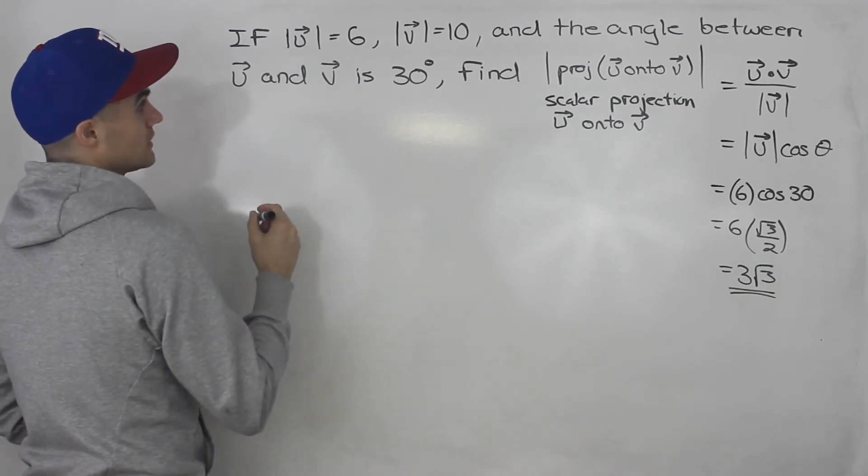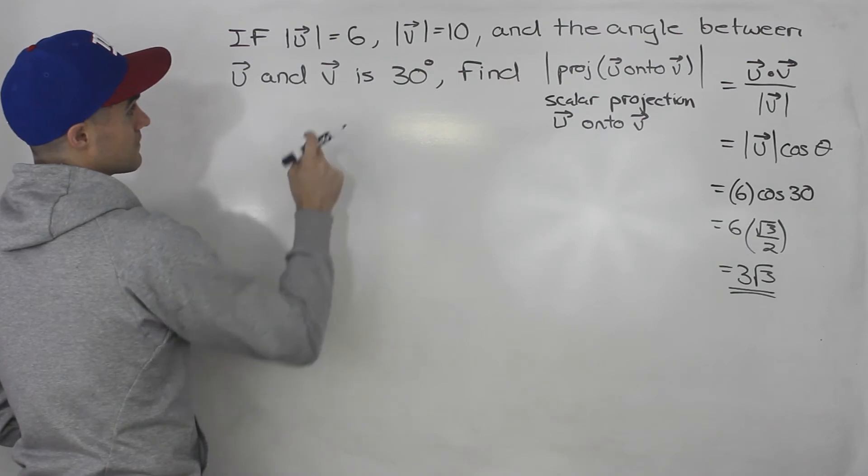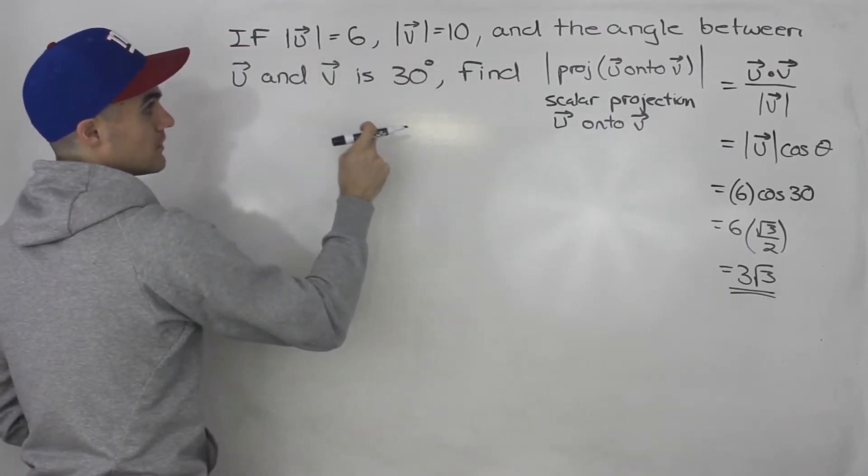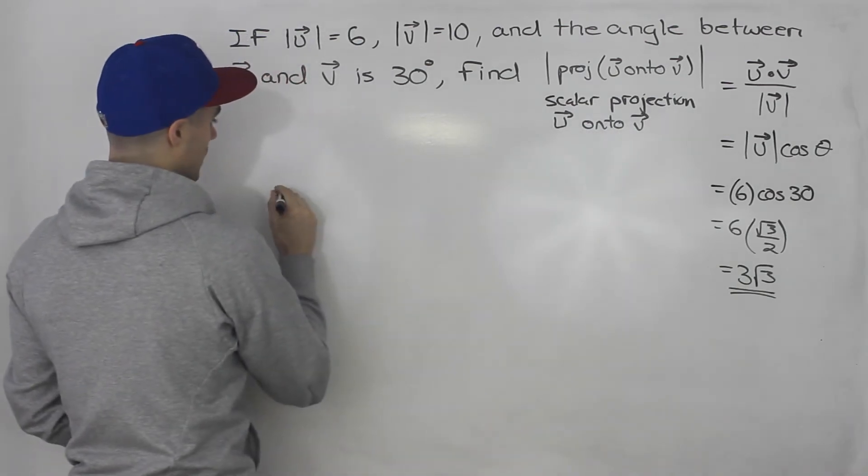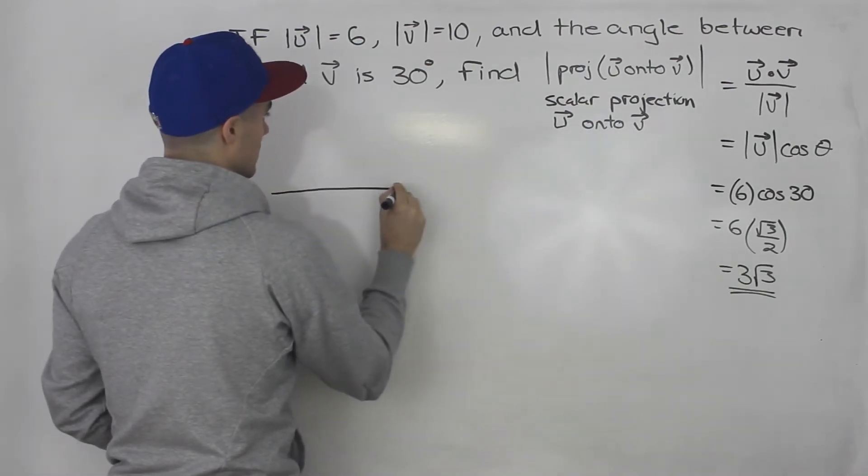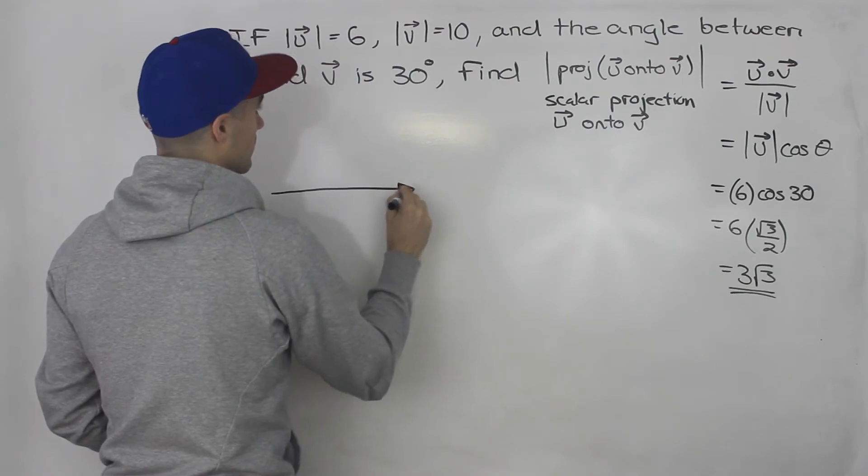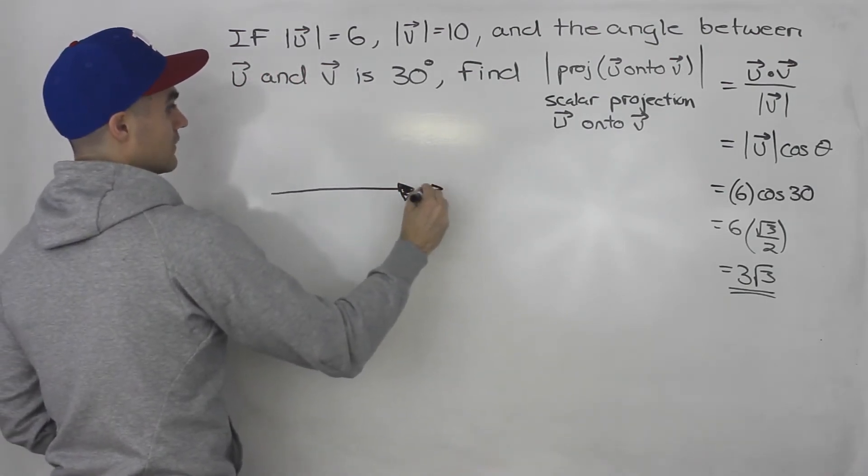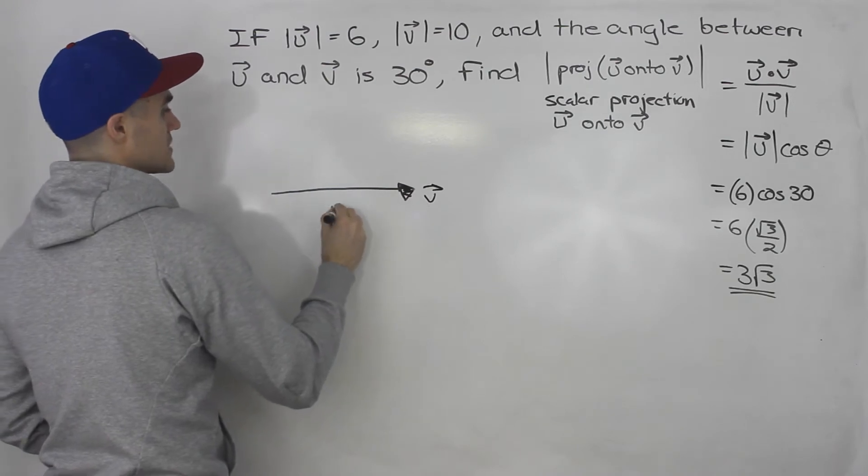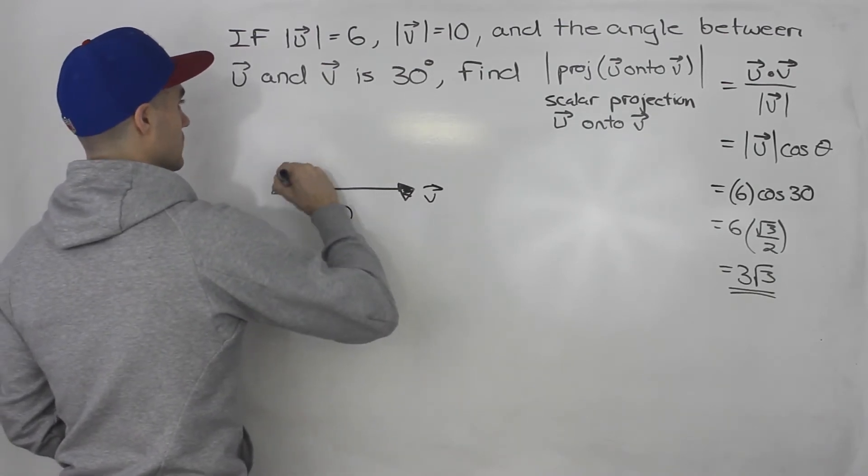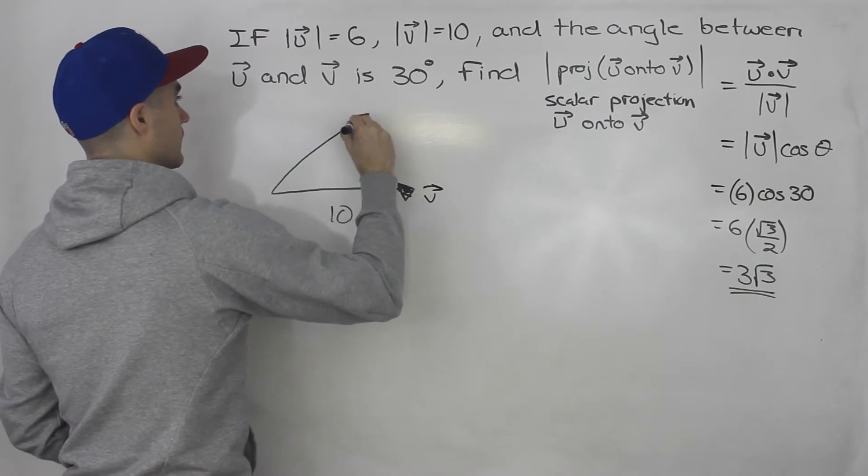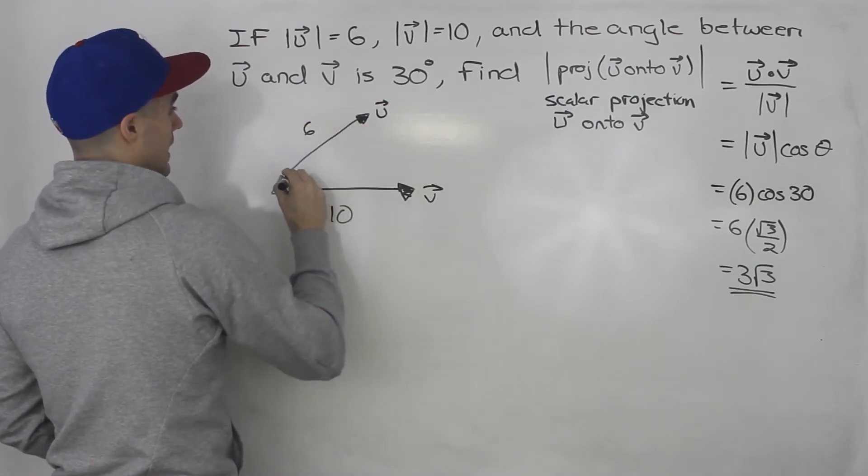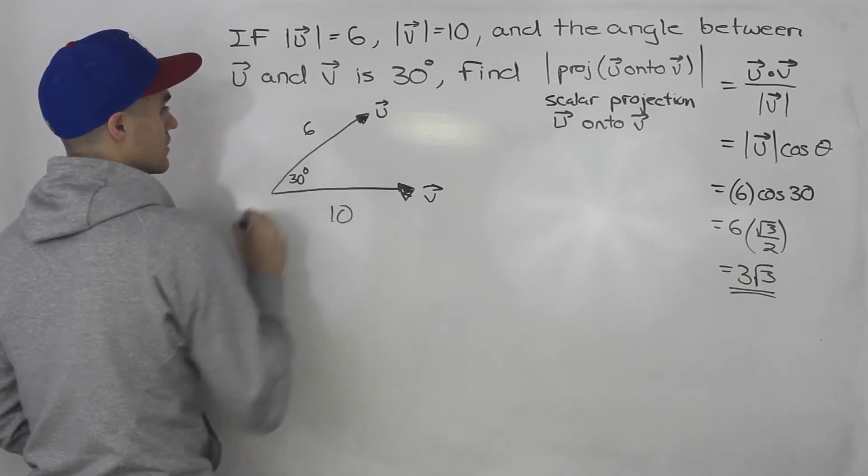So if we're projecting a vector u onto v, we're given u and v, the magnitudes of them, and the angle between them. The vector that we're projecting onto, you always want to draw that at the bottom. So this here is vector v. And vector v has a magnitude of 10. And then vector u is over here. So this is vector u. This is 6.